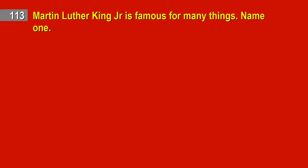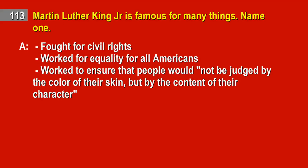Question 113. Martin Luther King Jr. is famous for many things. Name one. Answer: Fought for civil rights. Worked for equality for all Americans. Worked to ensure that people would not be judged by the color of their skin, but by the content of their character.